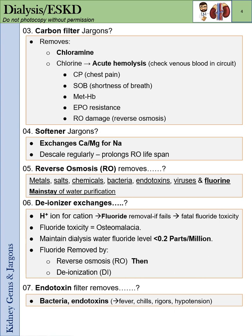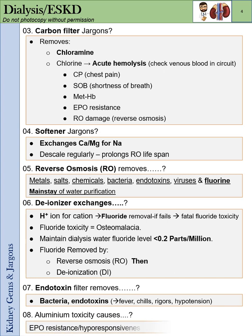The endotoxin filter removes bacteria and endotoxins, which cause fever, chills, rigors, and hypotension in patients in the dialysis unit. Aluminum toxicity causes EPO resistance, hyporesponsiveness, anemia, and altered mental status.